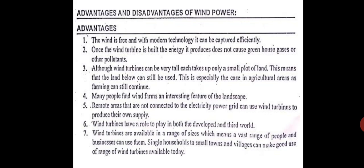Remote areas not connected to the electrical power grid can use wind turbines to produce their own supply. In villages and areas where electrical cables have not reached, decentralized wind turbines can generate and consume electricity on-site, reducing transmission and distribution losses. Wind turbines have a role to play in both developed countries like Germany and France, and developing countries like India.